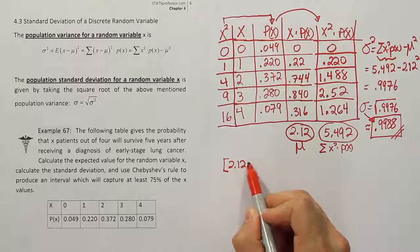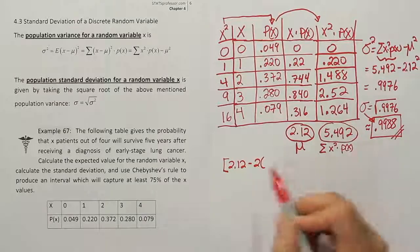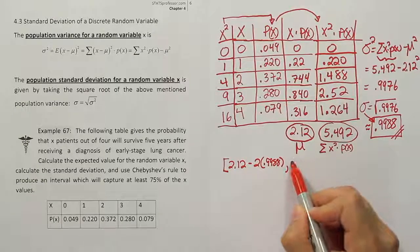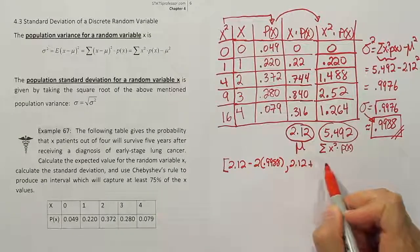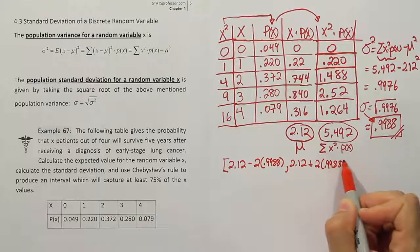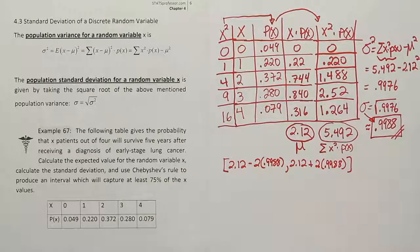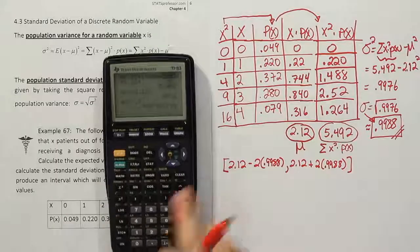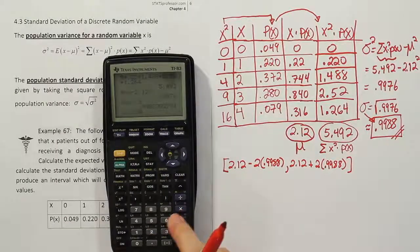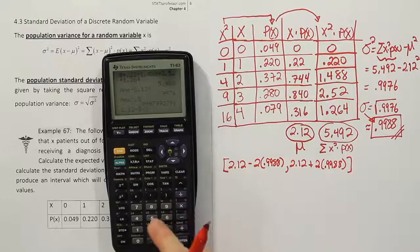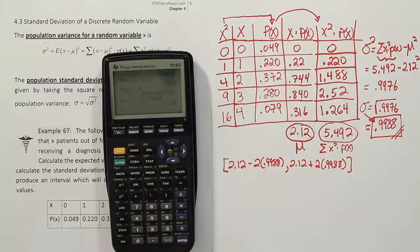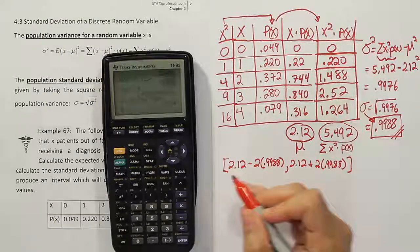Let's do the same thing but add two standard deviations. So in other words, I'm going to say, hey, this 2.12, let's subtract two of those standard deviations which were 0.9988. And let's do the same, 2.12 plus 2 times 0.9988. Okay, let's see what that gives us if we do that.